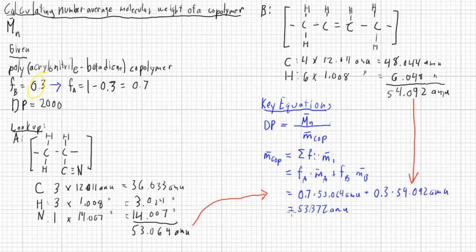And now we'll take this and put it into this equation up here. We're going to rearrange this equation so that M bar N equals degree of polymerization times M bar of the copolymer, which is right here.